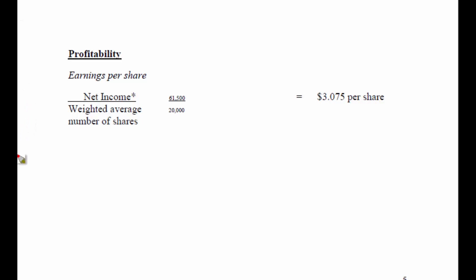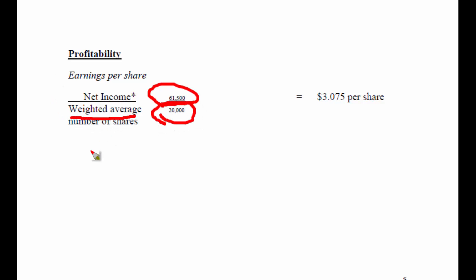Earnings per share, or basic earnings per share, is calculated using net income or profit over the number of shares that are outstanding. We actually use the weighted average number of shares. Weighting the number of shares means that depending on when the shareholders purchased their shares, that's how much weight we give to the shares that are outstanding.